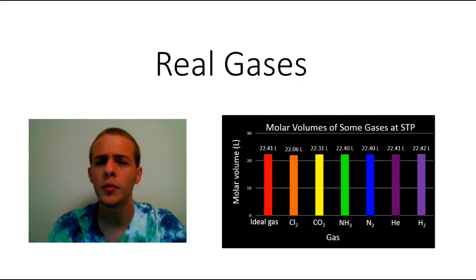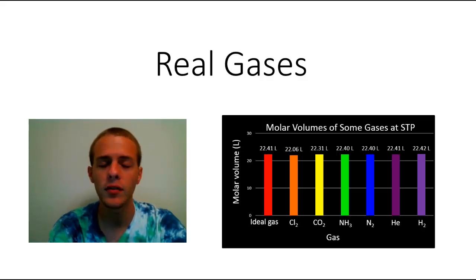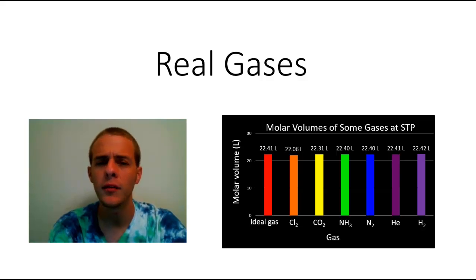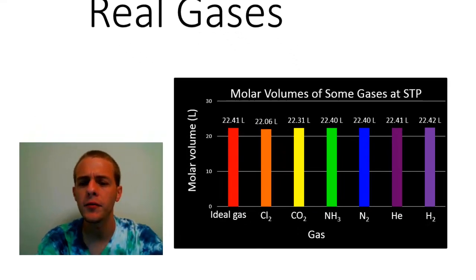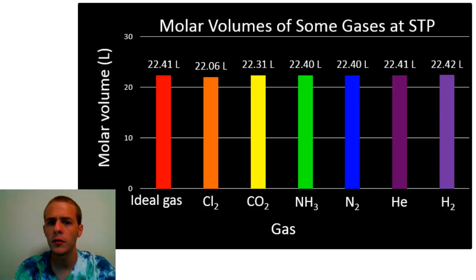A couple of videos ago, I posted a video where we talked about some applications of the ideal gas law. One of the things we did in that video is we determined the molar volume — that is the volume of one mole of a gas — under conditions of standard temperature and pressure, or STP, and we found it to be 22.4 liters. To four significant figures, that's 22.41 liters. In this graph here, we're comparing the molar volume of an ideal gas to the molar volumes of various gases, and we can see the values are very, very close. However, they're not the same.